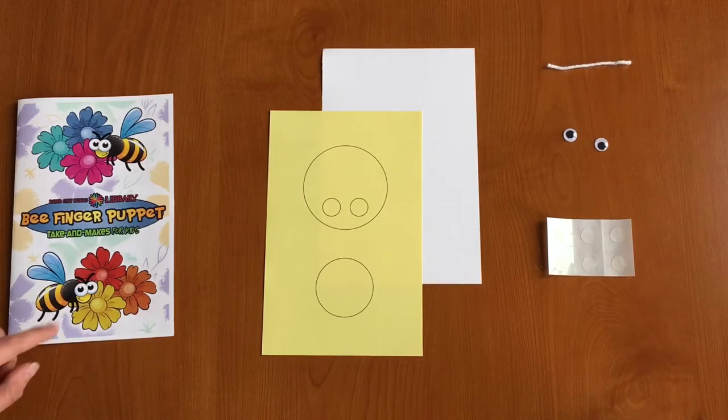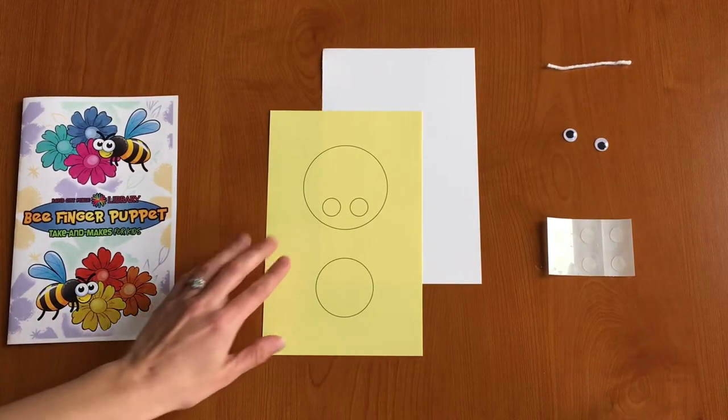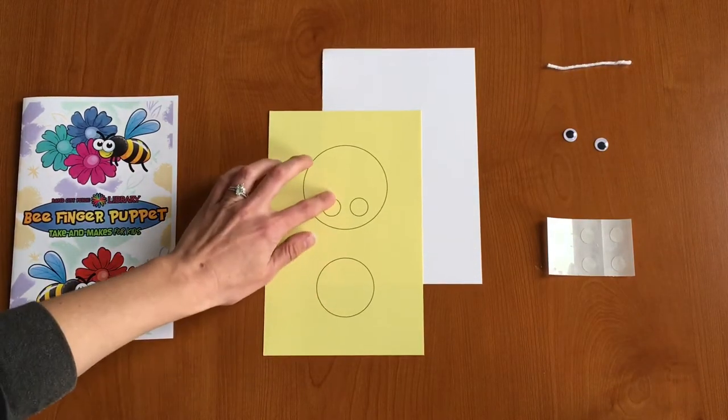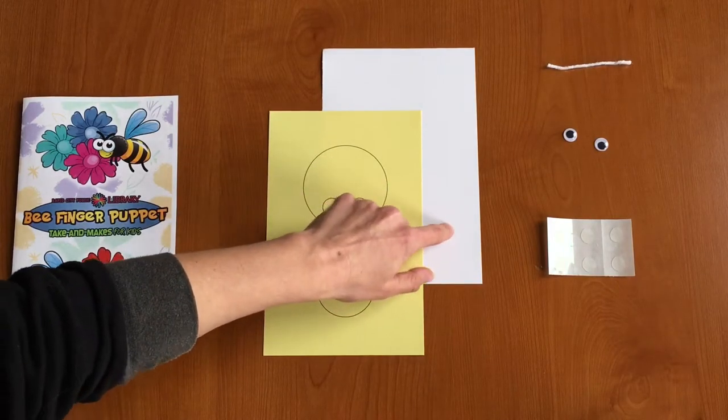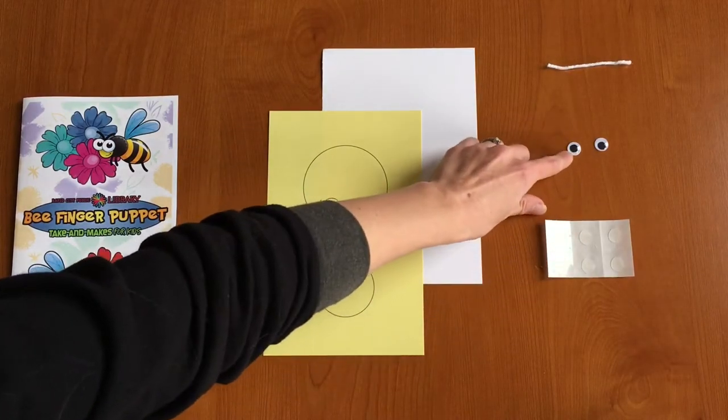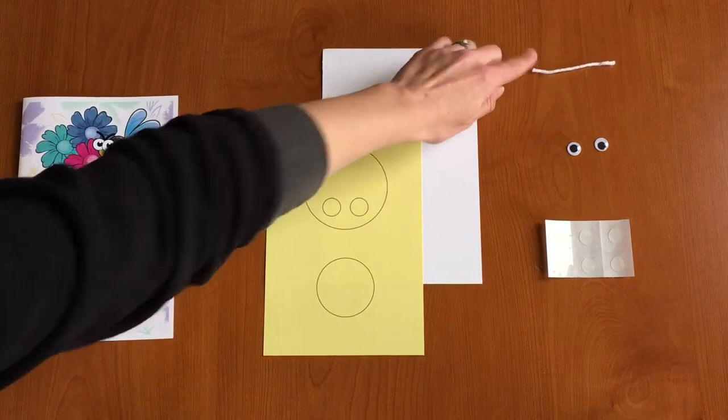Let's go ahead and get started and take a look at what we have in our kits today. In your Take and Make kit you should have an instruction booklet, a yellow piece of paper with two circles on it, a white piece of paper, some glue dots, two googly eyes, and a small piece of string.